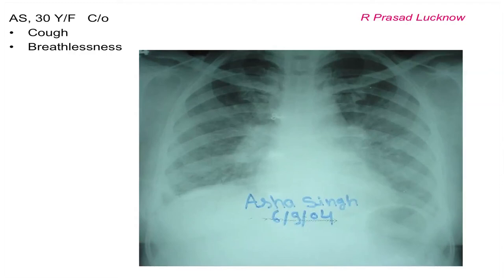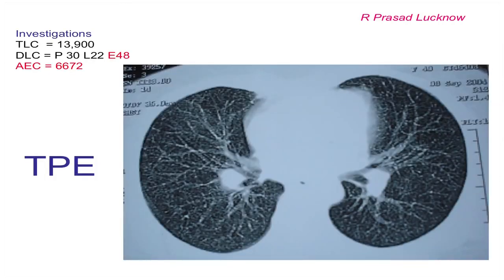Another lady presented with dry cough; X-ray appeared normal. CT thorax showed nodular shadows, and TLC-DLC revealed a very high eosinophil count. She was diagnosed as tropical pulmonary eosinophilia, treated, and got well.